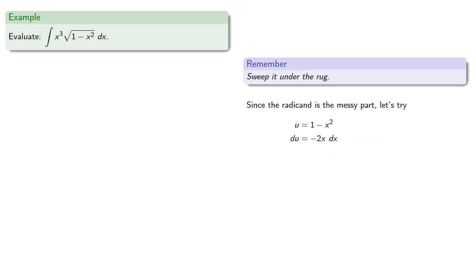Now our differential requires us to have a minus 2x dx, and remember, you can have anything you want as long as you pay for it. So we'll put in the minus 2x dx, and we'll pay for that by splitting off one factor of x from the x cubed, leaving us with an x squared.